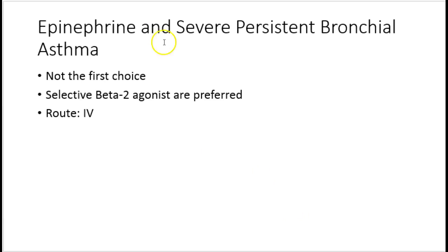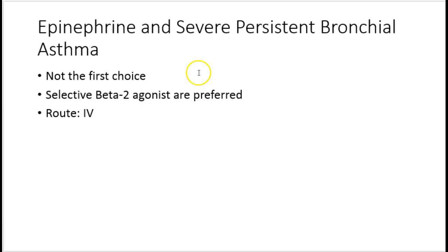Another use of epinephrine is in severe persistent bronchial asthma. Although not the first choice — we prefer selective beta 2 agonists — epinephrine can be used, and the route of administration in severe persistent bronchial asthma is intravenous.